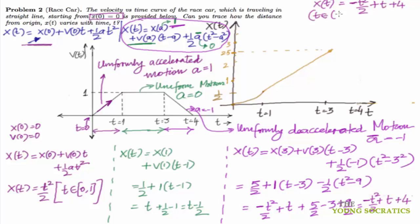To check continuity at t = 3: x(3) = −9/2 + 3 + 4 = 5/2 = 2.5, which matches. At t = 4: x(4) = −16/2 + 4 + 4 = −8 + 8 = 0, so the object returns to the origin at t = 4. The curve is a downward-opening parabola from (3, 2.5) back to (4, 0), as opposed to the upward parabola seen between t = 0 and t = 1.